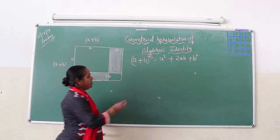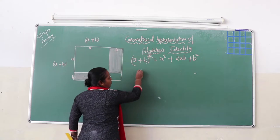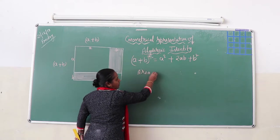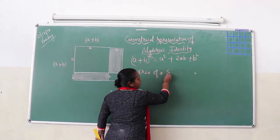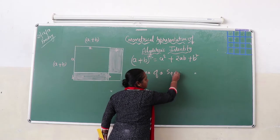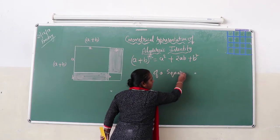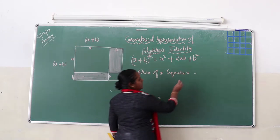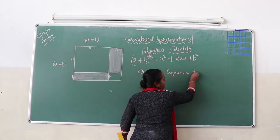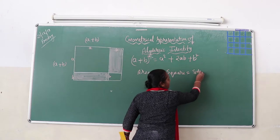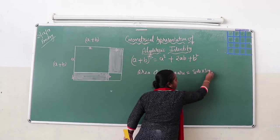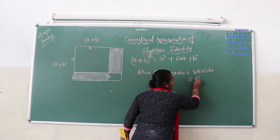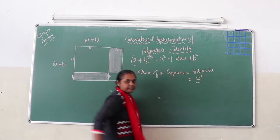Area of a square — everybody knows what it is. Area of a square is nothing but side multiplied by side, which is nothing but side squared.